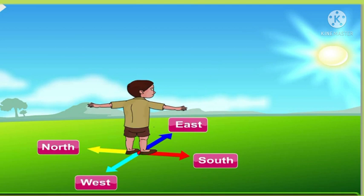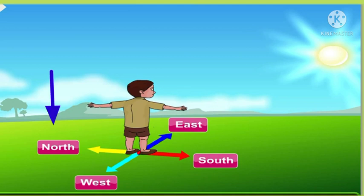Now students, behind him is the west — the direction behind him is west. The sun sets in the west in the evening, that you know. The boy's left hand points to the north, and his right hand points to the south.